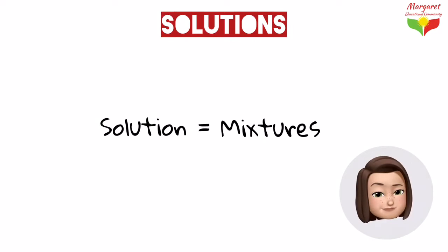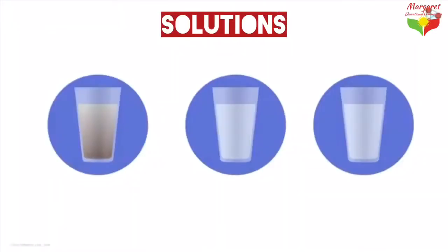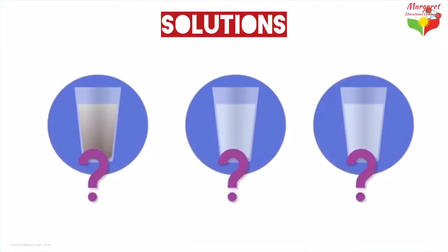So what is a solution — do solution and mixture refer to the same thing? Partially yes. A solution is an important type of mixture. In front of you there are three glasses of water: in one we've added mud, in another we've added salt, and in the third we've added sugar. Can you identify which glass has which mixture just by looking at them?